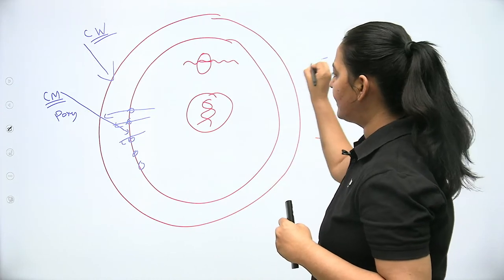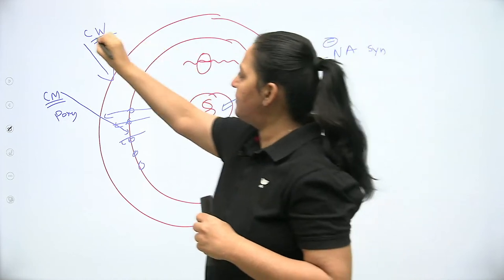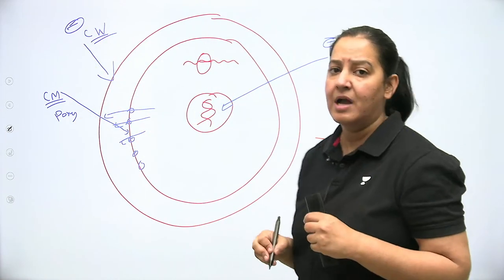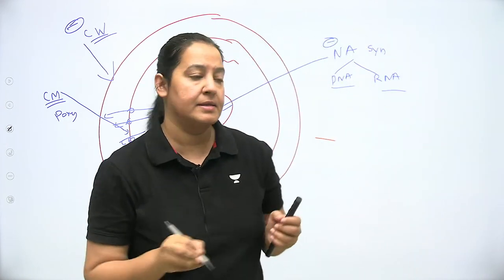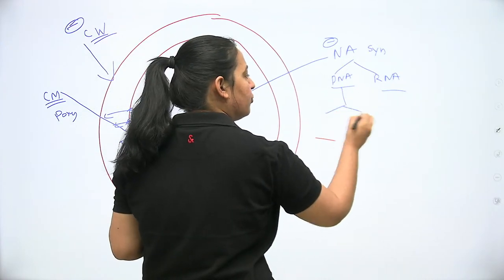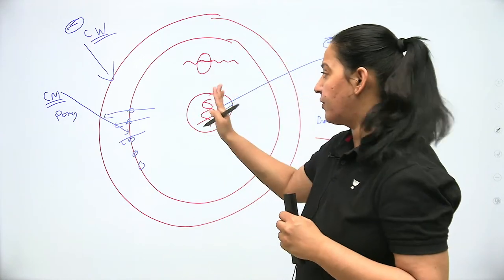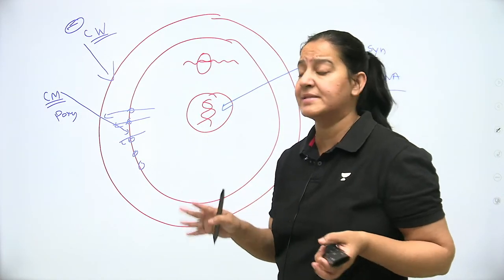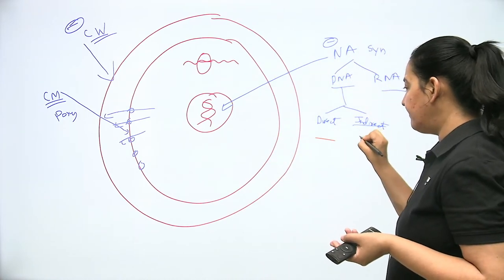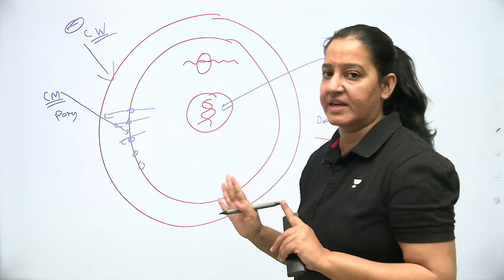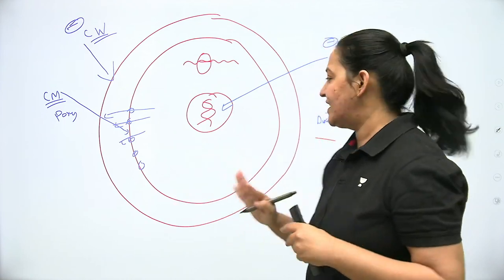The third mechanism is inhibition of nucleic acid synthesis. This can involve inhibiting either DNA or RNA synthesis. DNA synthesis inhibitors can be direct — inhibiting enzymes like DNA polymerase or RNA polymerase — or indirect, by inhibiting folic acid synthesis. Since folic acid is required for DNA synthesis, blocking folic acid indirectly blocks DNA synthesis. That is why those are called indirect inhibitors.